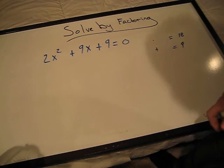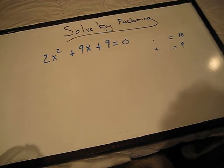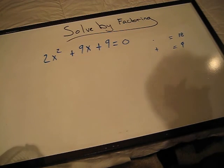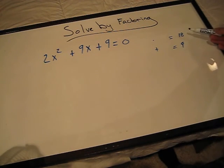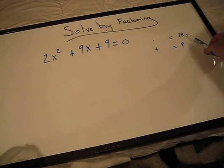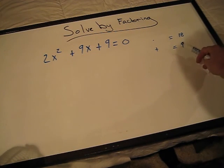Our first step is to take our problem and make it into four terms. To do so, we need to find a number that multiplied together equals 18 and added together equals 9.